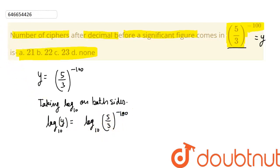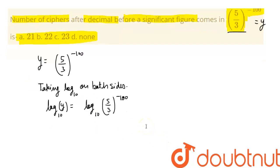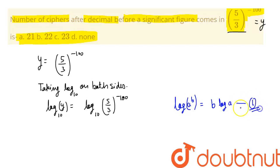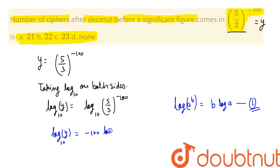Now we apply the logarithm power property: log(a^b) = b · log(a). Using this property on the right-hand side, we get log₁₀(y) = −100 × log₁₀(5/3).